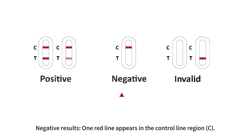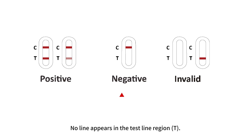Negative results: one red line appears in the control line region (C). No line appears in the test line region (T). Invalid results: control line fails to appear.